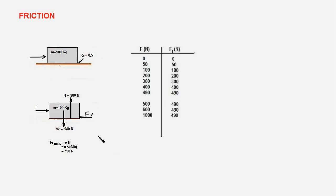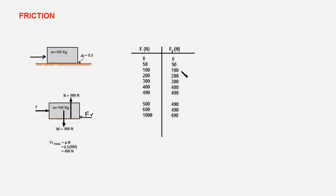We tabulate this data in two columns: the first listing the magnitude of the applied force and the second listing the frictional force. When the applied force is 0, the frictional force is also 0. When it is 50 Newtons, friction is 50 Newtons, and when the applied force is 100 Newtons, friction is 100 Newtons. We keep increasing the applied force gradually and notice the body doesn't move — it remains in equilibrium — so the frictional force keeps increasing, counterbalancing the applied force.